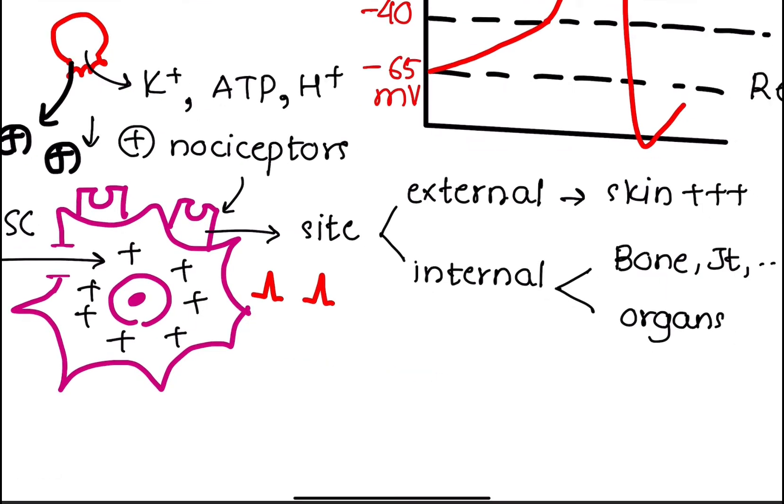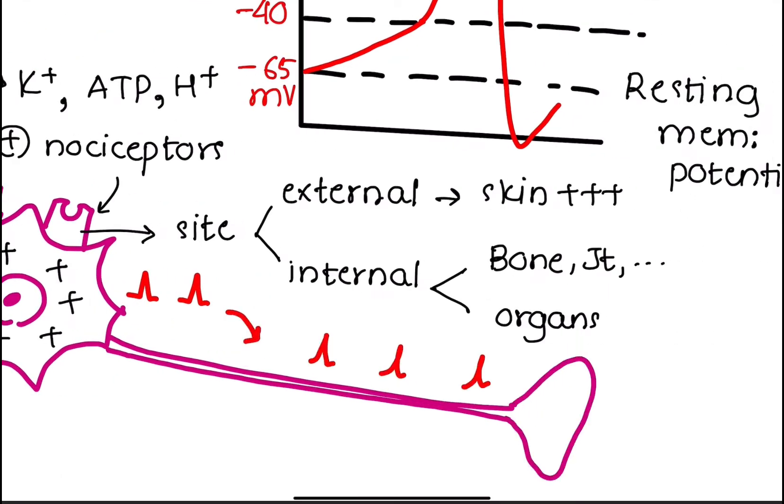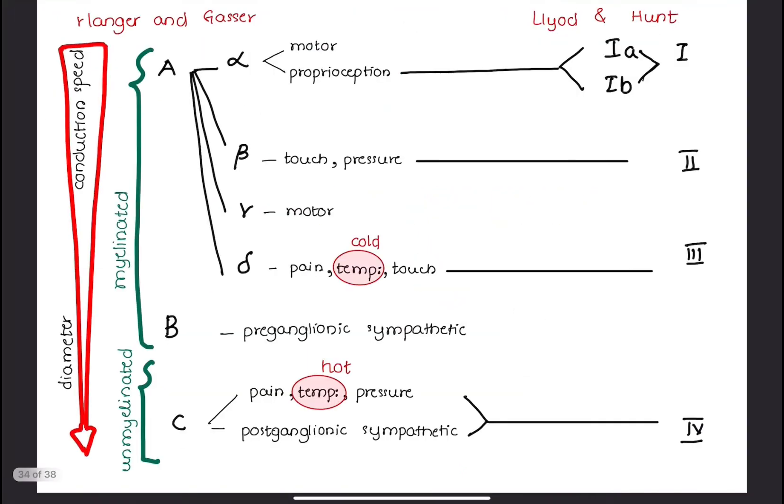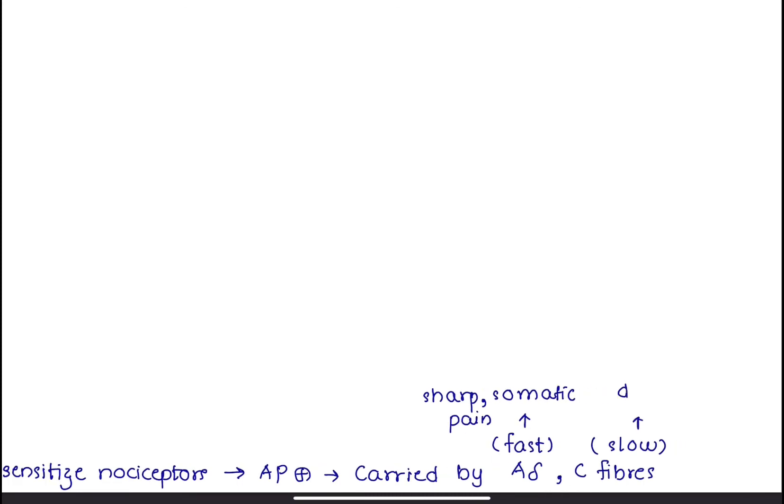The action potential travels along the axon of a primary neuron. Do you remember which axon fiber carried the pain signal? The answer is A-delta and C fibers. Alright, let's get back on track. So, the noxious stimulus is turned into action potential and carried by A-delta and C fibers. A-delta fibers are fast myelinated fibers and C fibers are slow unmyelinated fibers. That's why A-delta fibers carry well-localized sharp somatic pain and C fibers carry poorly localized visceral pain.